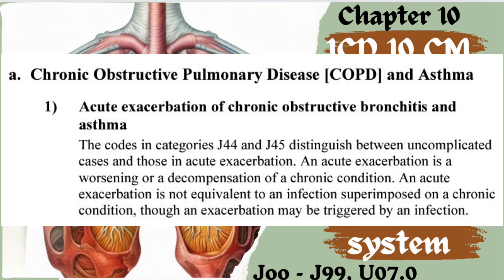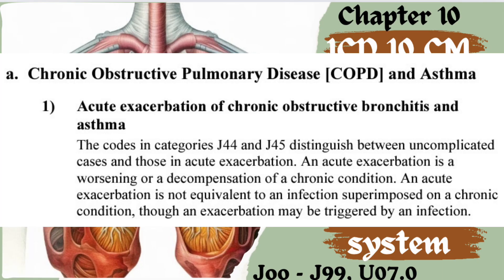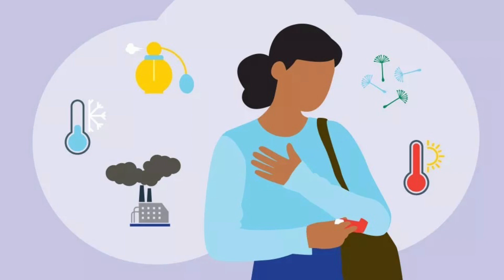The first guideline point is A — Chronic Obstructive Pulmonary Disease, also called COPD, and asthma. COPD is a common lung disease that restricts airflow and causes breathing difficulty — it is a chronic condition. The first sub-point covers acute exacerbation of chronic obstructive bronchitis and asthma. Exacerbation means worsening of the condition: the patient already has the disease, but at a particular time it becomes very severe.